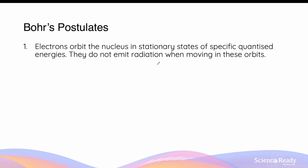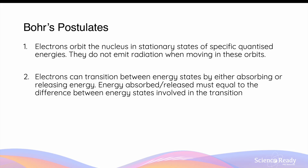The second postulate in Bohr's model is that electrons can transition between these energy states by either absorbing or releasing energy. The further away an orbit is from the nucleus, the higher the energy level it has. Electrons can absorb a certain amount of energy to transition from a lower to a higher energy level, and vice versa, an electron can return to a lower energy level by releasing the same amount of energy. The energy absorbed and released during this electron transition must equal the difference between the energy levels involved. If the energy given is any less or any more than this exact amount, the electron will not be able to transition between the different energy states.